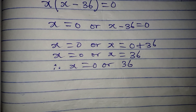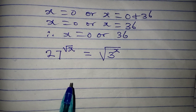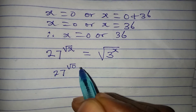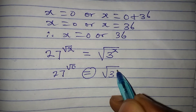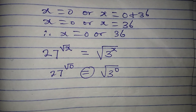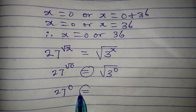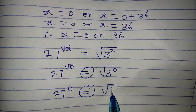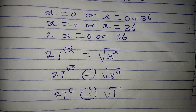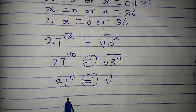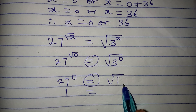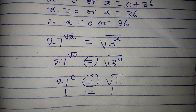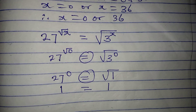In the original equation, substituting x equals 0: the left side is 27 to the power of square root of 0, which is 27 to the power of 0, equals 1. The right side: 3 to the power of 0 is 1, and the square root of 1 is 1. Both sides equal 1, so x equals 0 is correct.